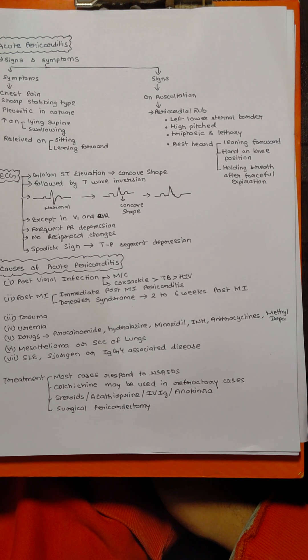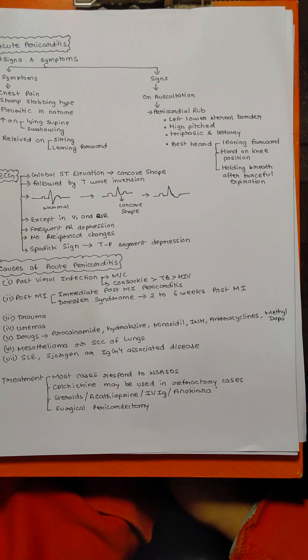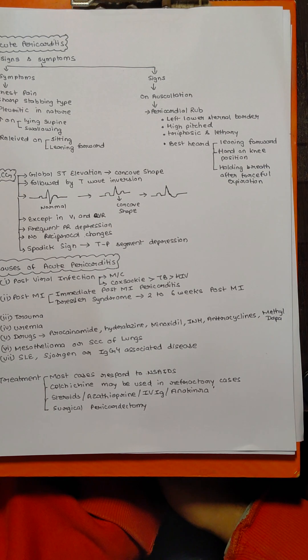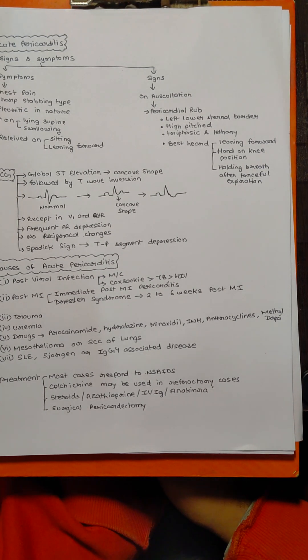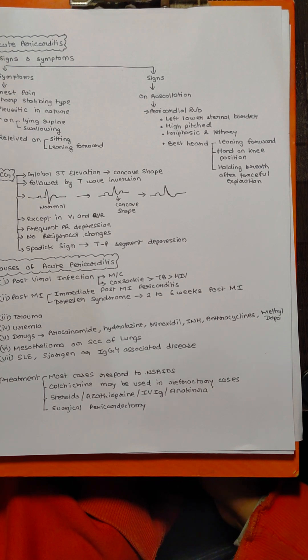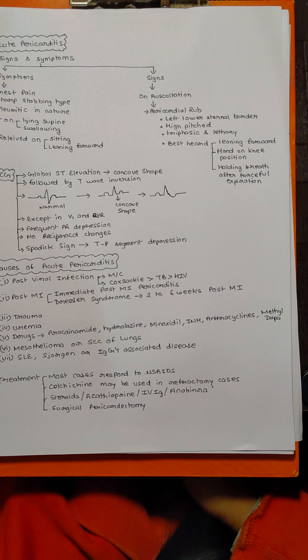Then there is the post-MI acute pericarditis. Post-MI acute pericarditis is first divided into two types: there is the immediate post-MI pericarditis. In this you don't have to do much—you are already giving the patient aspirin which has some analgesic effect; we just increase the dose of aspirin. The other thing is Dressler syndrome.